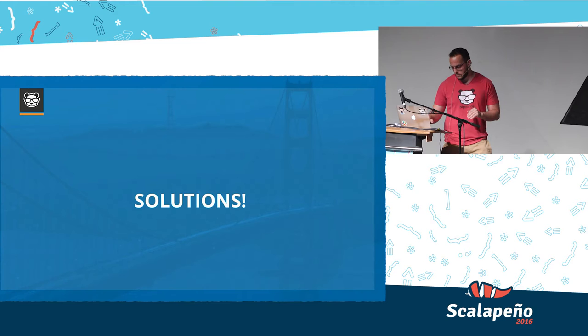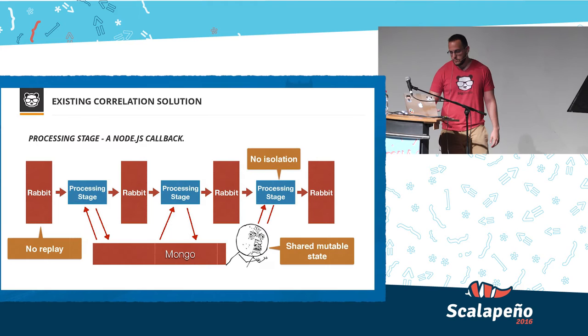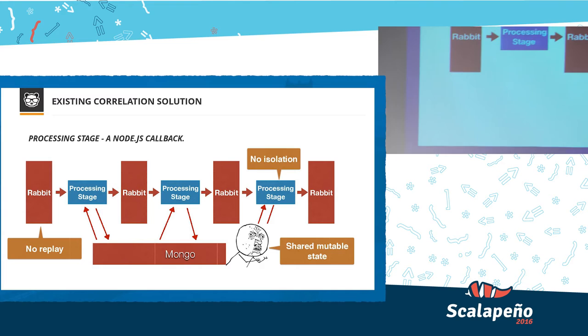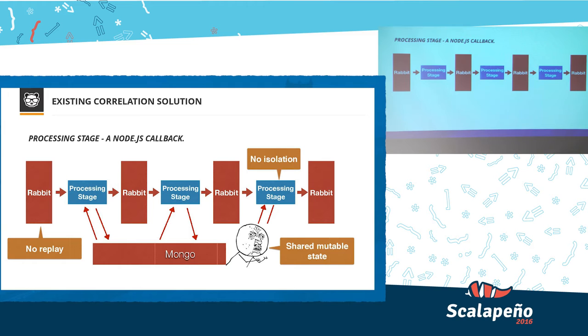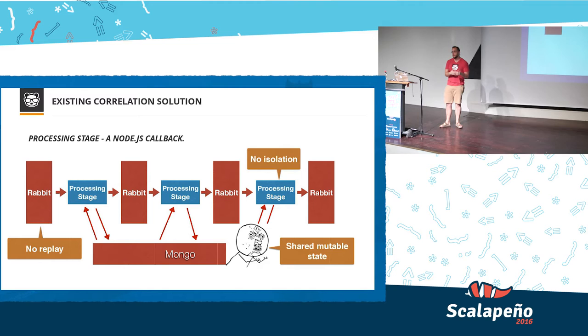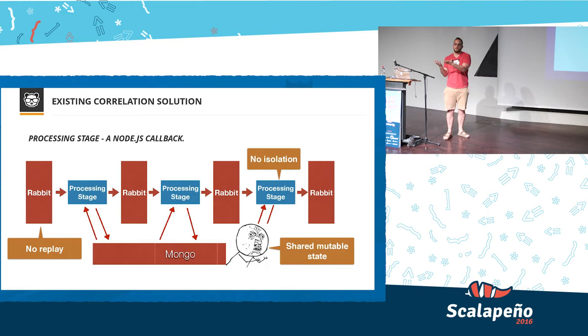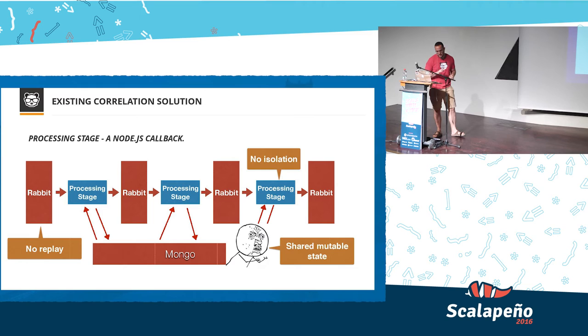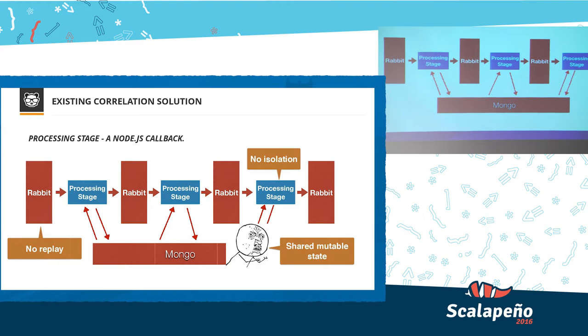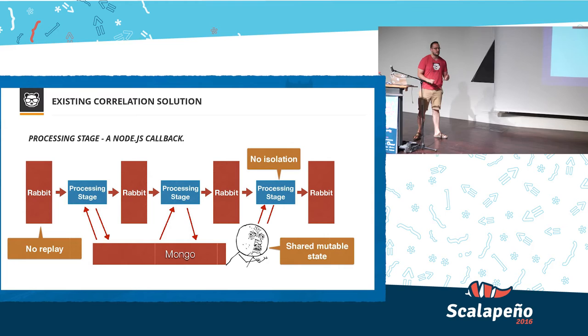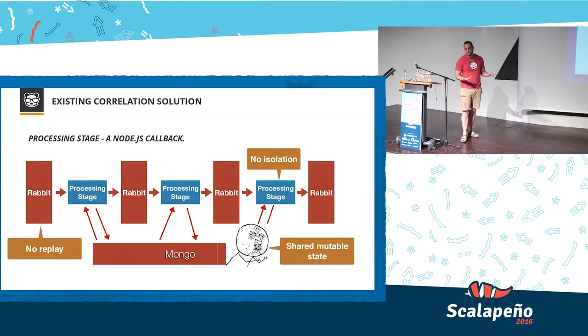Let's see how the existing correlation solution looks like. This is only the correlation server. This is a Node.js-based server. There are a few processing stages, all linked by RabbitMQ. And a processing stage is essentially a Node.js callback that is subscribed on a RabbitMQ queue. And it does some sort of processing to the data. It might do some I/O. And it writes the result back to the next queue. And that's how they communicate with each other. And they all mutate data in Mongo. There are several problems and disadvantages that are inherent to Node.js. First off, the problem here is that there is no replay. The queues are ephemeral.